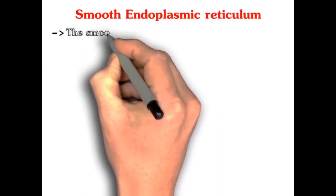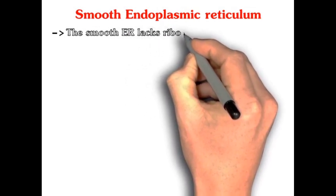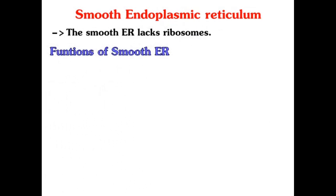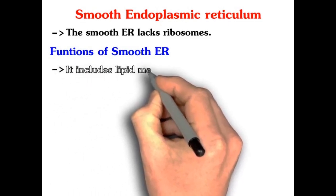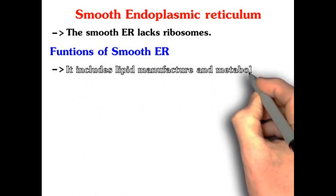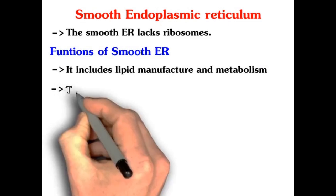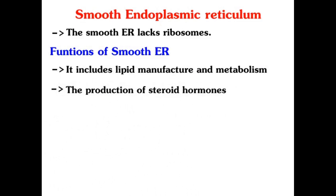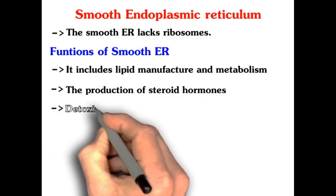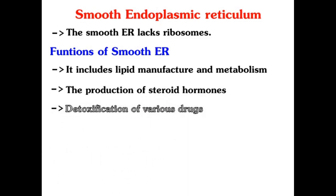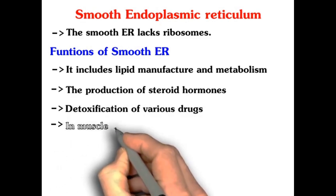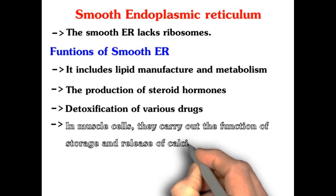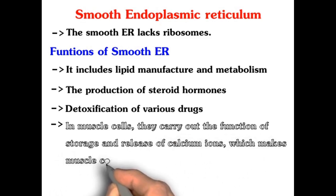Now we'll see smooth endoplasmic reticulum. The smooth endoplasmic reticulum lacks ribosomes. Its functions include lipid manufacturing and its metabolism, production of steroid hormones, detoxification of various drugs, and in muscle cells they carry out the function of storage and release of calcium ions, which makes muscle contraction possible.